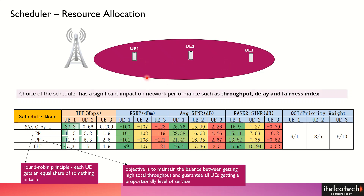In that case, user 1 would still get maximum throughput, which may not be desired. There is a trade-off because user 2 and user 3 are suffering — user 3 is not getting good or decent throughput at all.